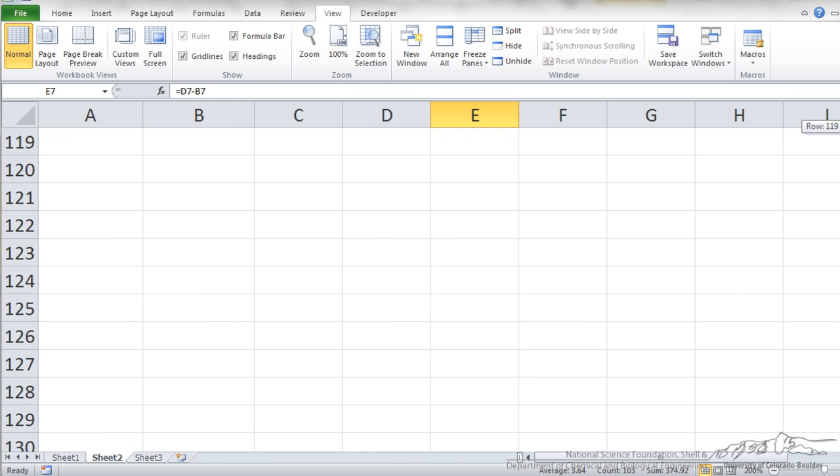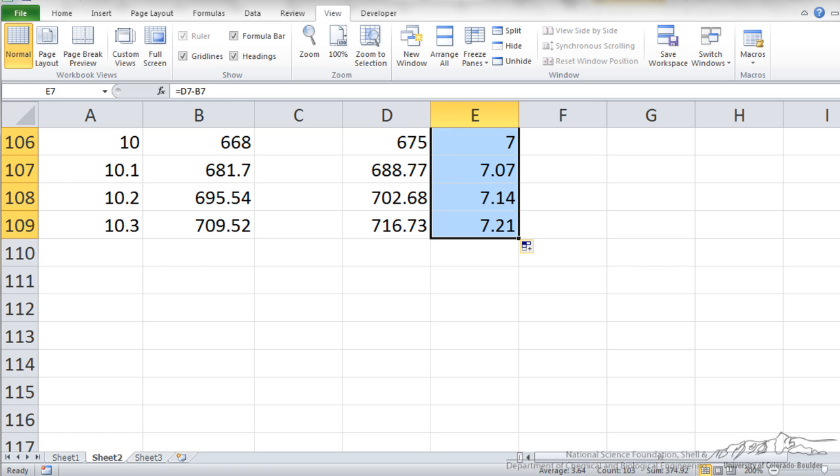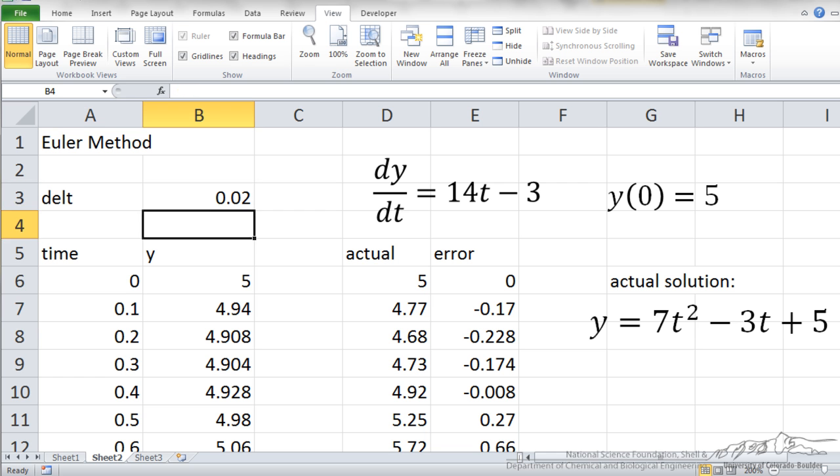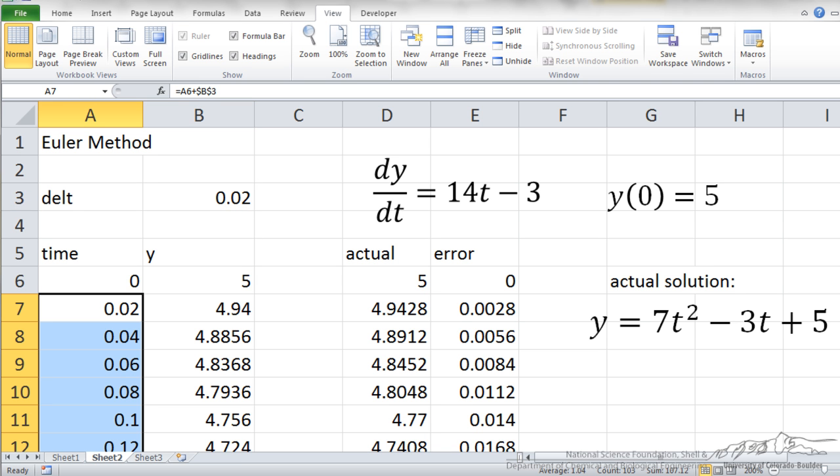So you see that once I have calculated the error, it gets pretty big once our time step is really large. So if I wanted to, I can change this to a much smaller value, like 0.02. Having a smaller time step will lead to a decrease in error.